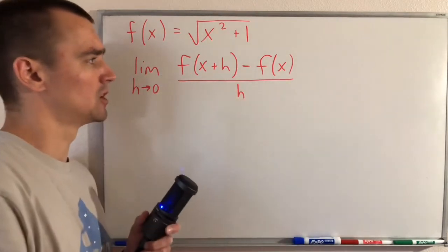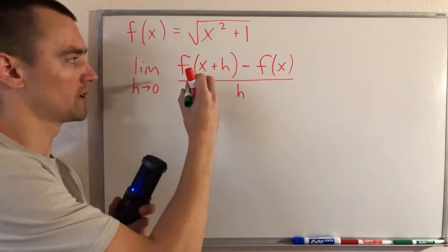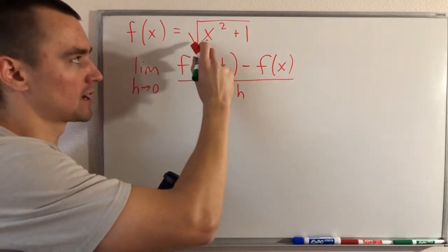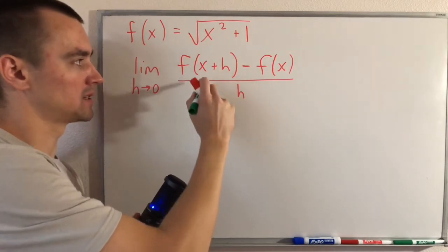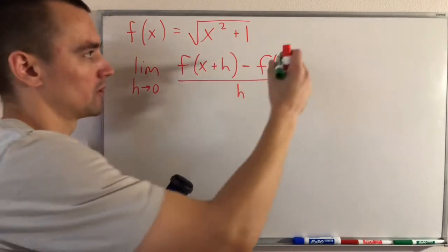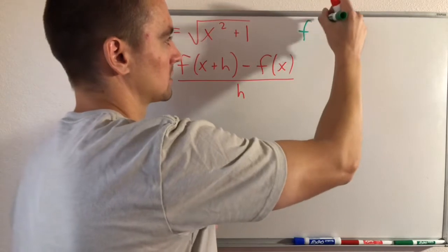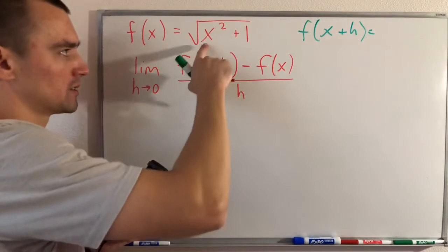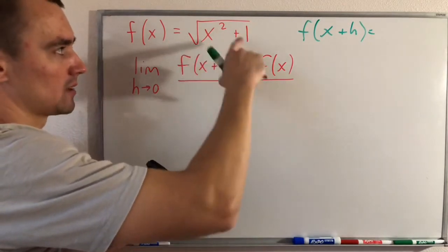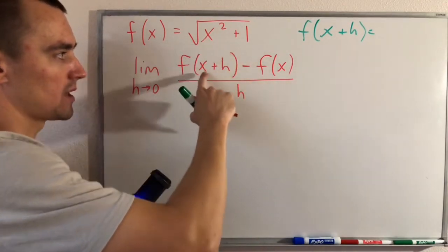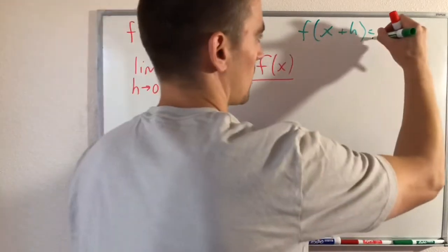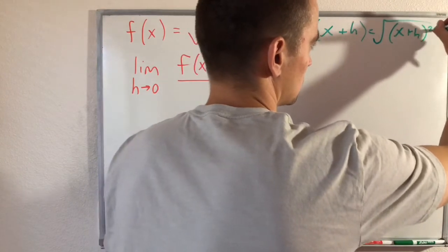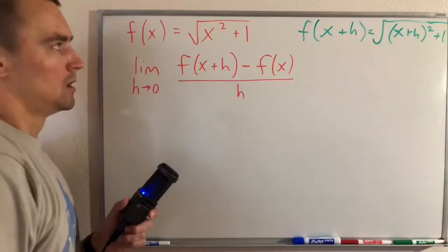The first piece is f(x+h), which essentially means we go to our function f and replace all of our x's with (x+h). So basically, if we look at our function f(x) and think about what f(x+h) is, we take exactly what we have but replace x with (x+h), giving us √((x+h)² + 1).